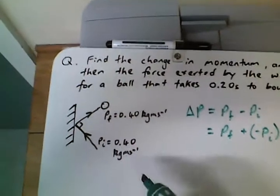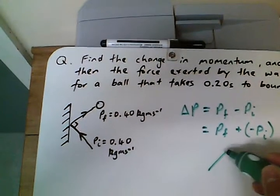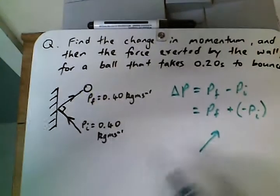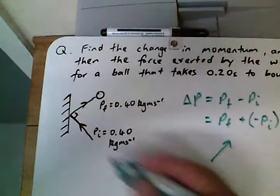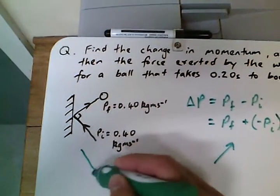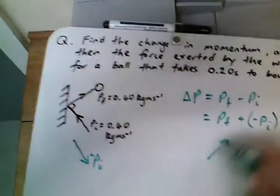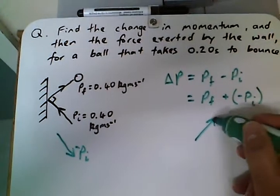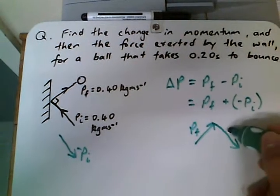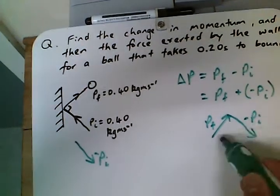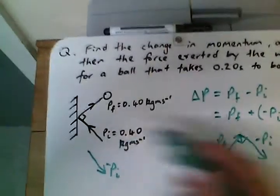Okay, so our final is easy, that's this one up here. I'm just putting the head on there to show it's a vector. And the negative of the initial is going to be in the opposite direction. So we just have to add it head to tail. Remember there's a right angle here, so we'll have a right angle here.